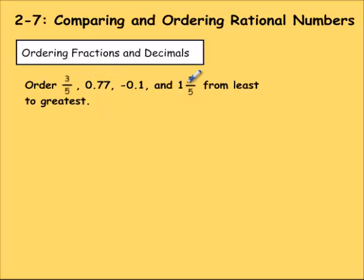Now we have these four numbers to order from least to greatest. We have 3/5, 0.77, negative 0.1, and 1 and 1/5. When you have a mix of fractions and decimals, it's always good to turn them all either into fractions or all into decimals. And since turning a fraction into a decimal is easier because it's an unfinished division problem, I'm going to do it that way.